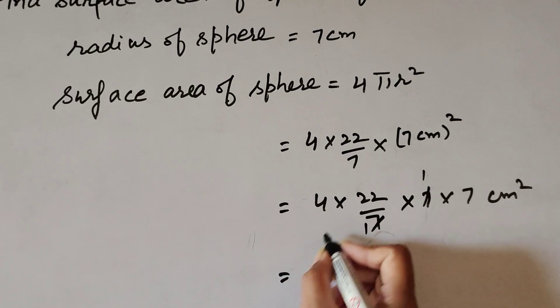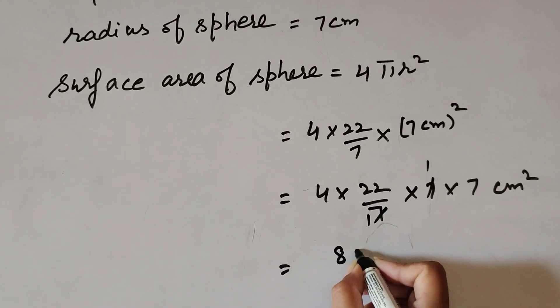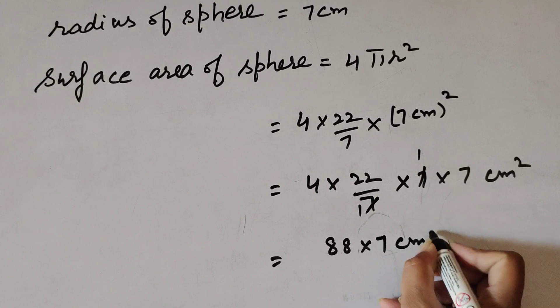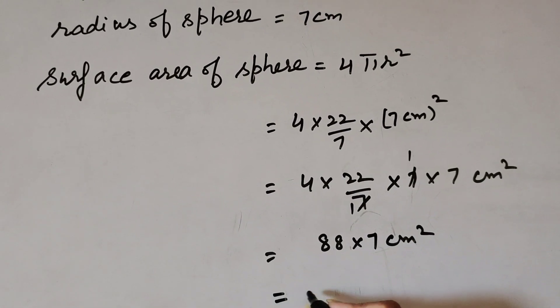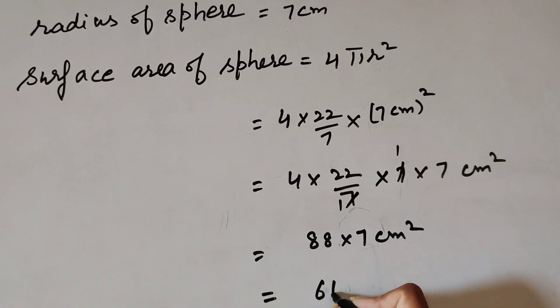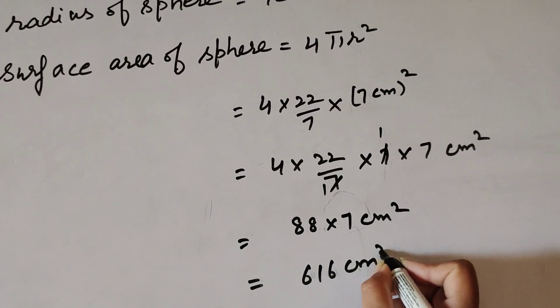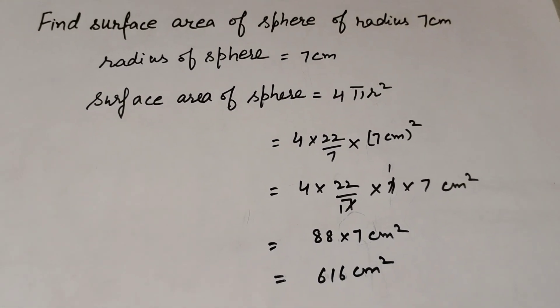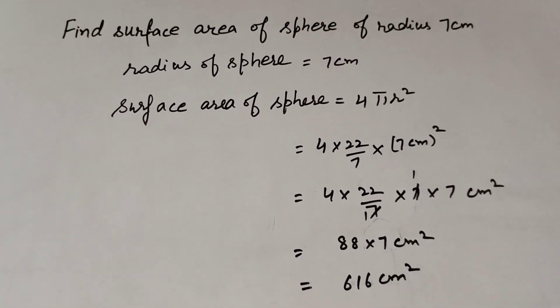4 multiply by 22, it is 88 × 7 cm². Now 88 × 7, we get answer 616 cm². So the surface area of this sphere is 616 cm².